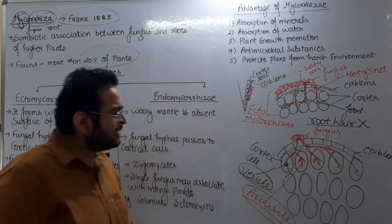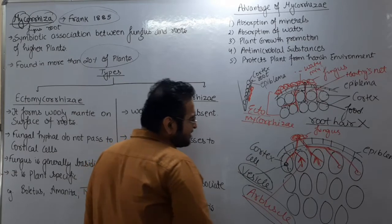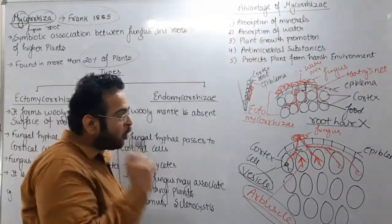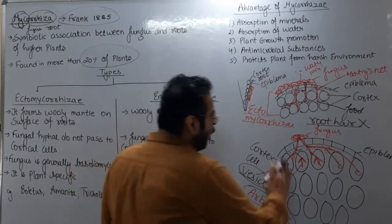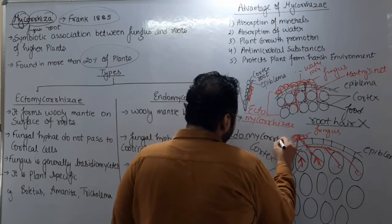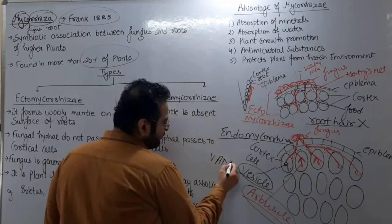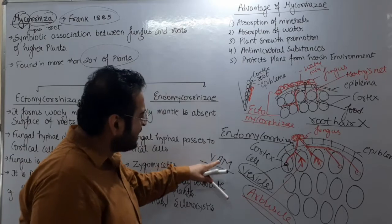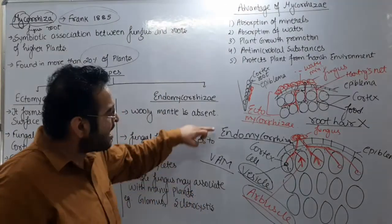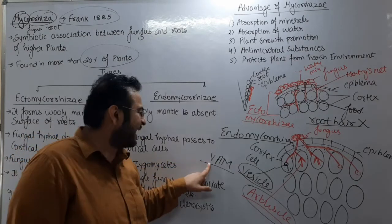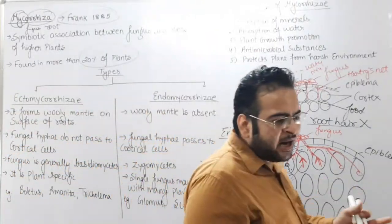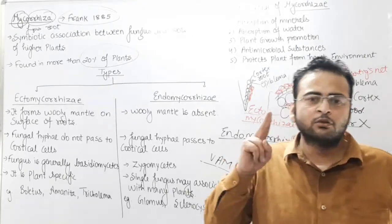To do structures ki help se fungus food capture karegi cell ke andar se — arbuscal aur vesicle — aur saath intercellular spaces se bhi food uthayegi. Is liye is fungus ko kehte hain endomycorrhiza, ya VAM, yani Vesicular Arbuscular Mycorrhiza. Endomycorrhiza ke do naam hain: pehla endomycorrhiza aur doosra VAM, that is Vesicular Arbuscular Mycorrhiza.